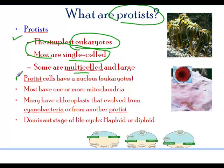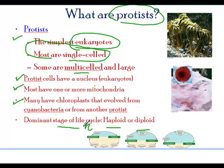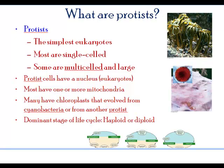Uni means one. Protist cells have a nucleus, one or more mitochondria, chloroplasts, and a life cycle that is either haploid or diploid. Haploid means half the number of chromosomes and diploid means twice the number of chromosomes. So we will find some kind of more complex reproduction in this particular kingdom.